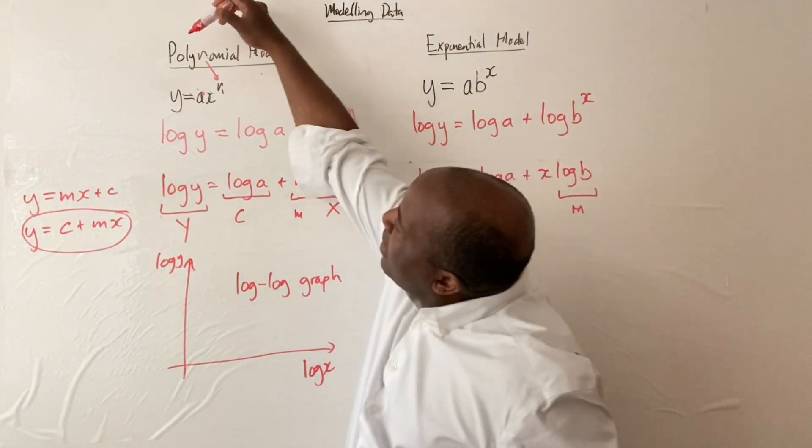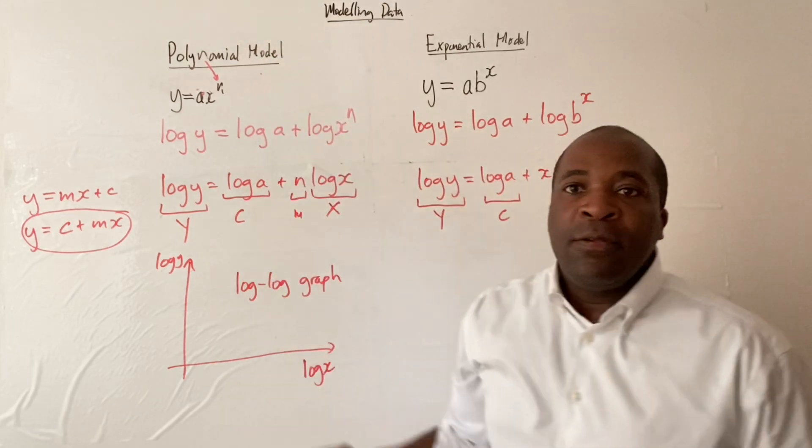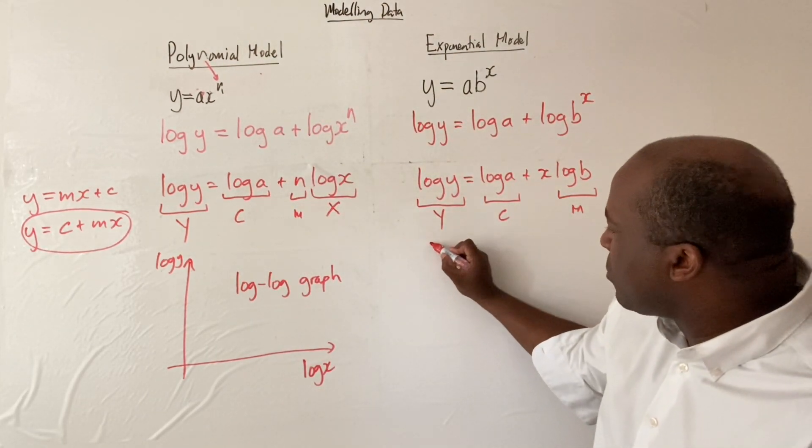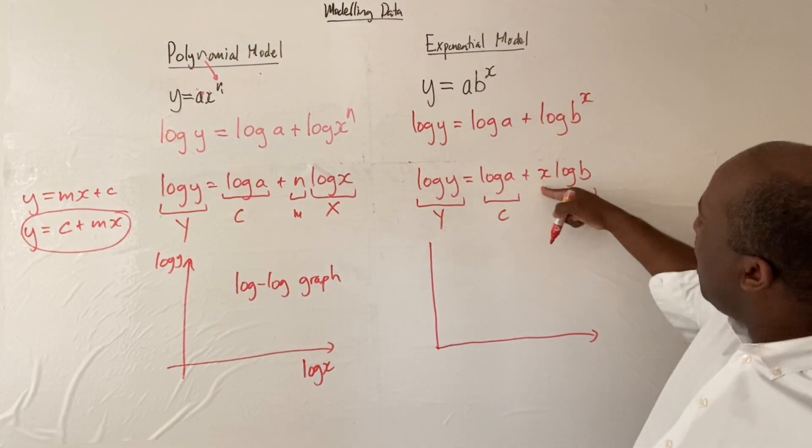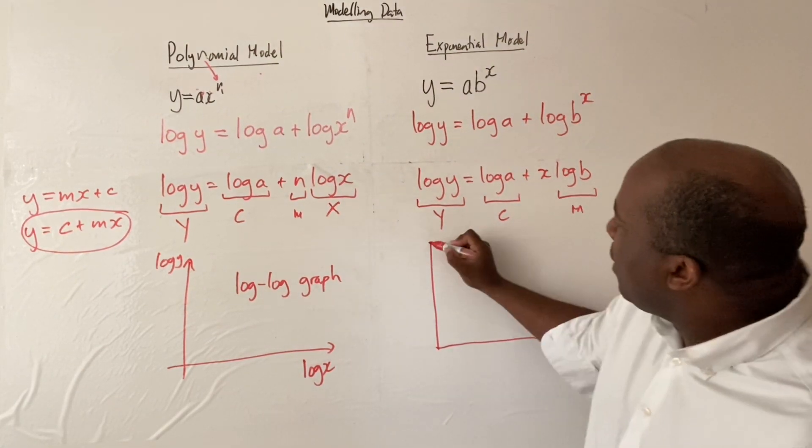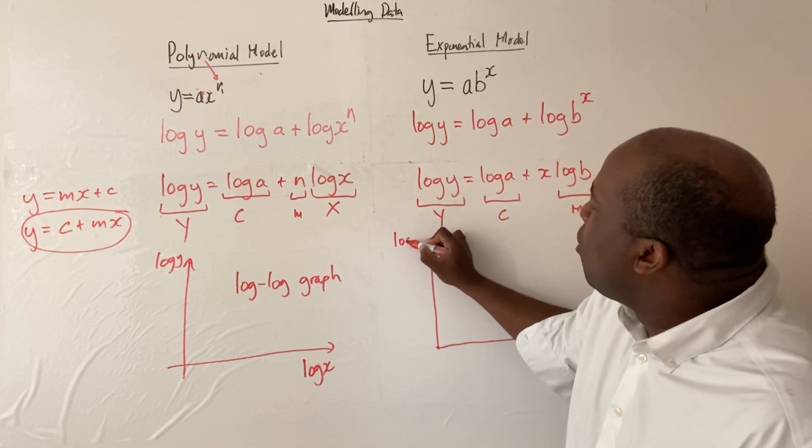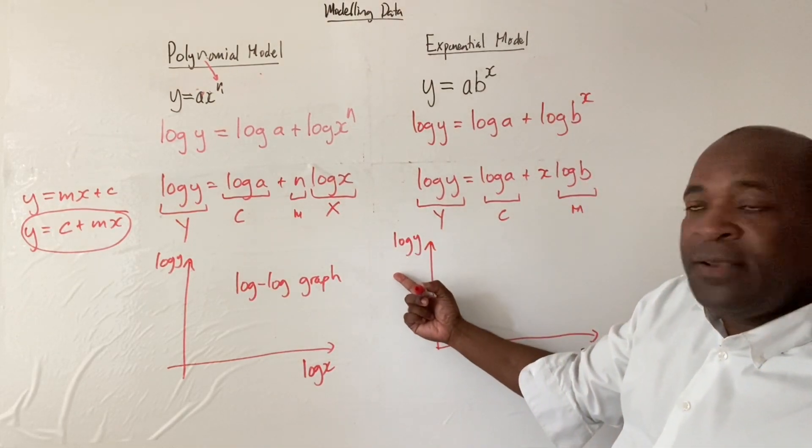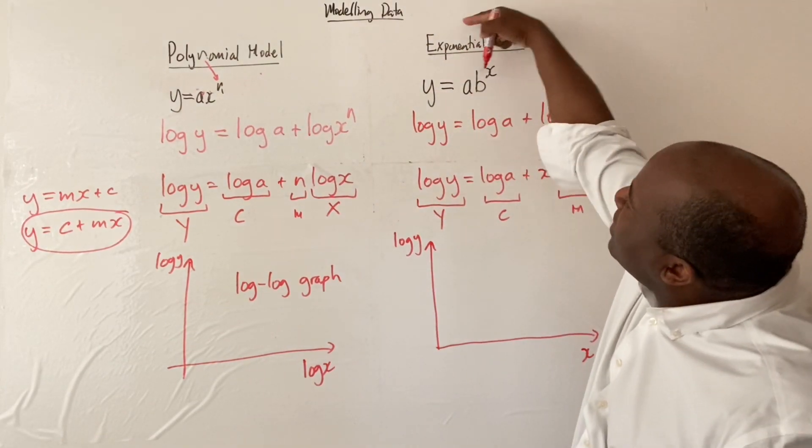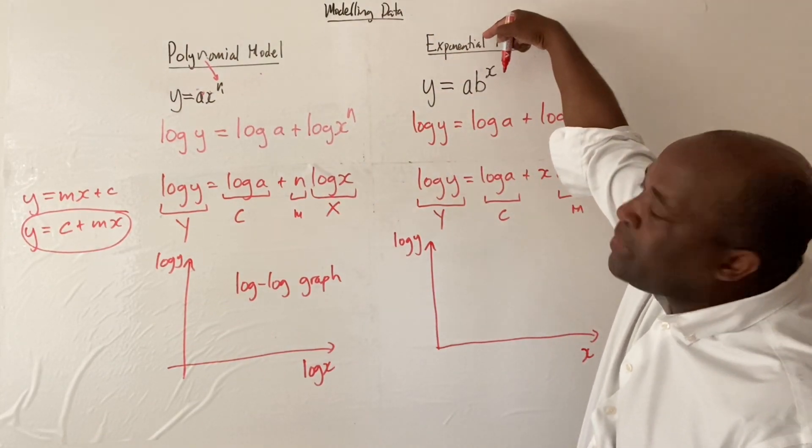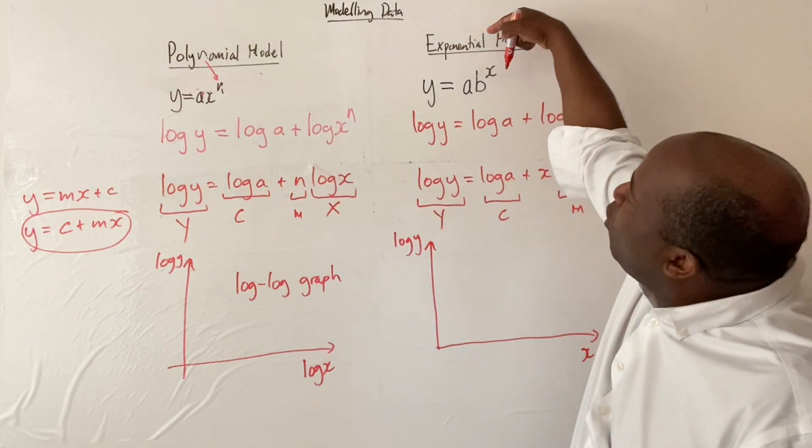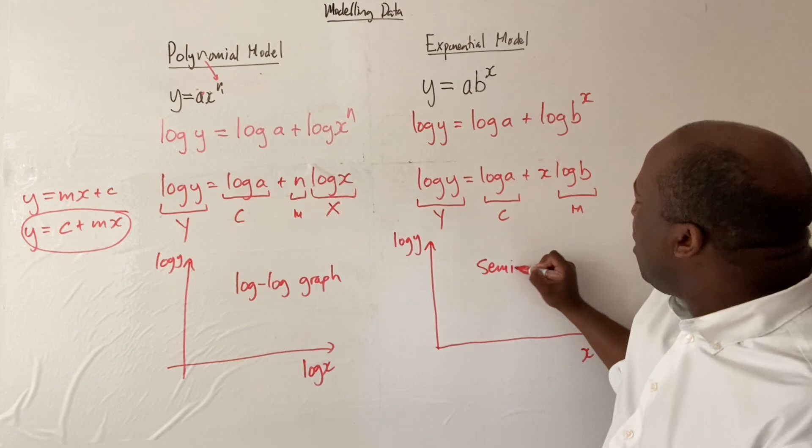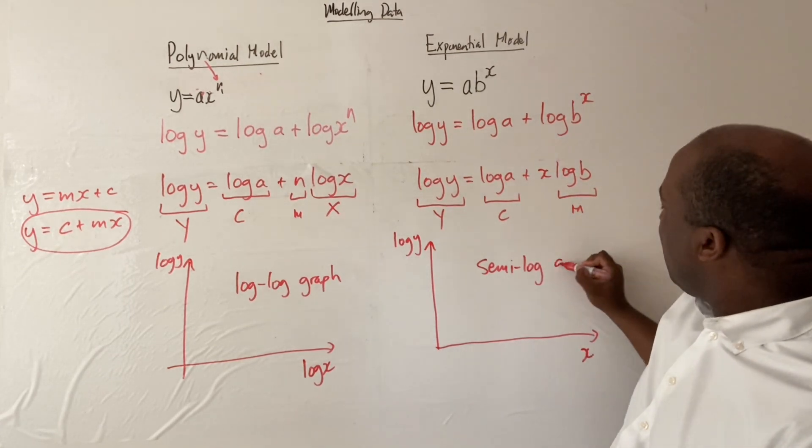Here, we have x here, and then we have log y here. Notice, only a single log is involved for the exponential, so there's only a single log here. Anytime you see the exponential, there's only one log. This is called a semi-log graph.